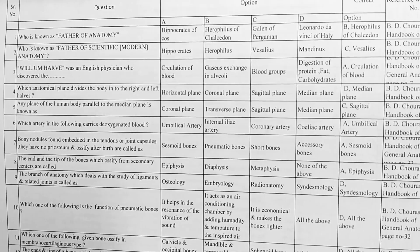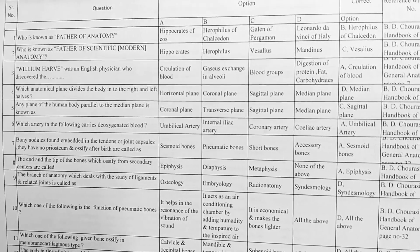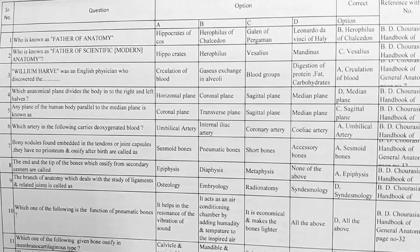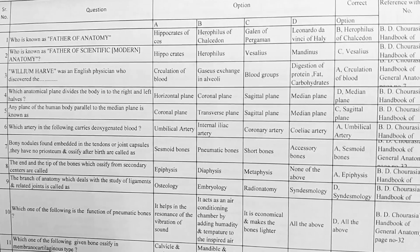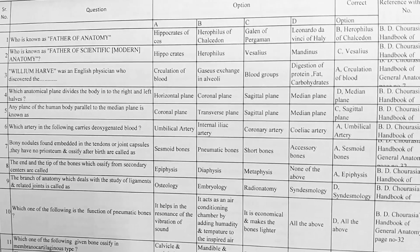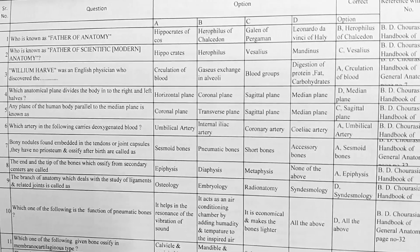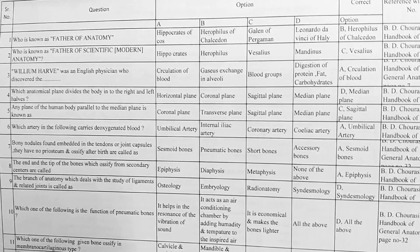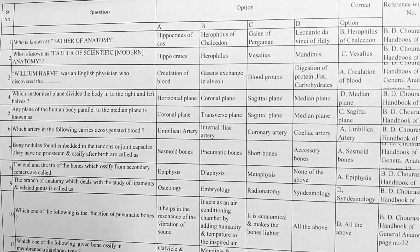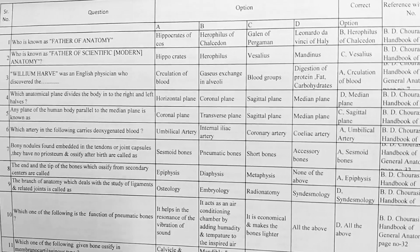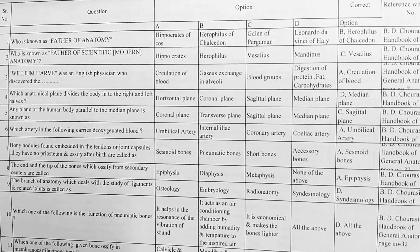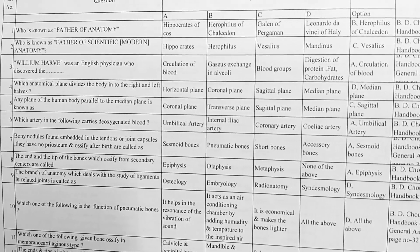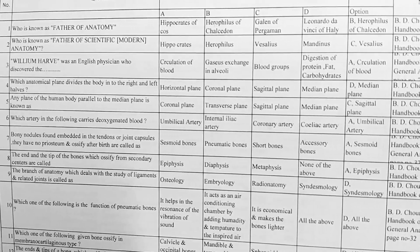Now let's start. Who is known as father of anatomy? Options: A. Hippocrates, B. Herophilus of Chalcedon, C. Galen of Pergamon, D. Leonardo da Vinci. The correct option is B, Herophilus of Chalcedon.